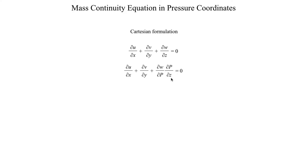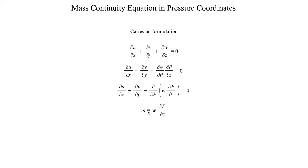However, this does transform into a different form of the mass continuity equation in pressure coordinates, which is our end goal. We can rewrite this derivative as the derivative of pressure with respect to the product w·(dp/dz). From the previous segment, we showed that omega equals w·(dp/dz) to a reasonable approximation. So we can replace w·(dp/dz) with omega.